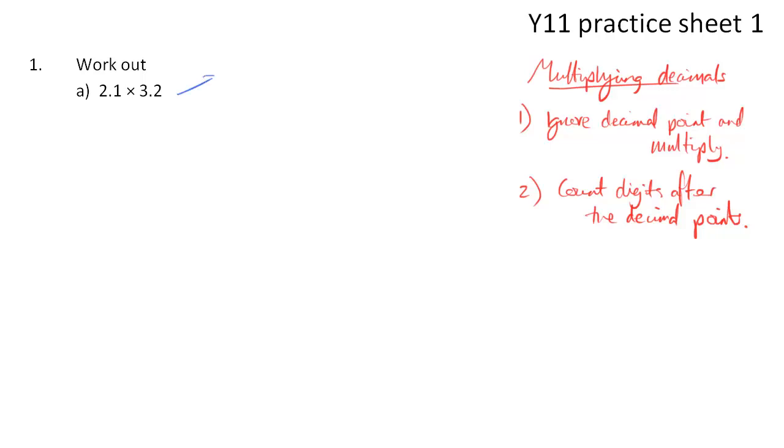Example A, 2.1 times 3.2. Well, if we ignore the decimal point, this is what we get, 21 times 32. For this question, I'm going to do the multiplication two different ways, just to illustrate the methods that are most commonly used. Method 1, my preferred method, is the traditional column method of multiplication. 21 times 32, you start by doing 2 times 21. So 2 times 1 is 2, 2 times 2 is 4.